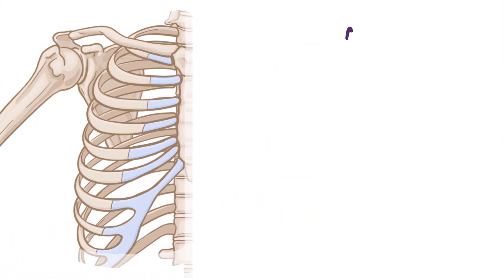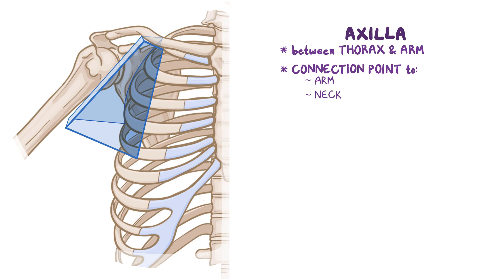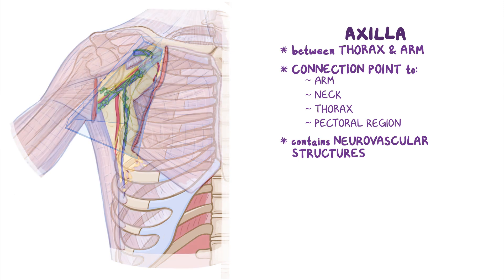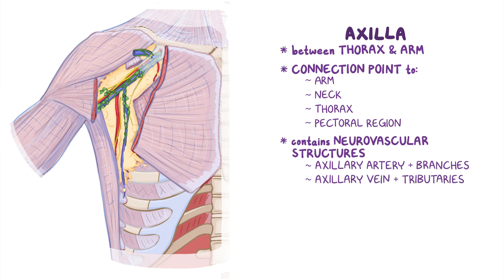As a quick recap, the axilla is a pyramid-shaped space that lies between the thorax and the arm and serves as a connection point between the arm, neck, thorax, and pectoral regions. It contains a number of neurovascular structures embedded in a fatty matrix, including the three parts of the axillary artery and their branches, the axillary vein and its tributaries, and the five groups of axillary lymph nodes.